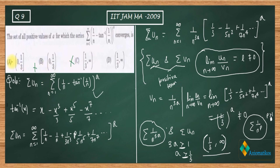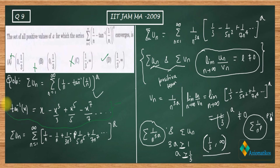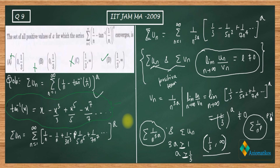So option D is the correct answer. The most important part of this question is remembering the arctan expansion — if you remember that, and know the limit comparison test and the p-series test, you can easily solve this problem. Thank you.